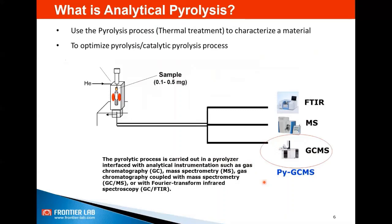What is analytical pyrolysis? In analytical pyrolysis, we use the pyrolysis process to characterize a material. It can also be used to optimize a pyrolysis or catalytic pyrolysis process. You take a small sample in a micro furnace which is set at high temperature. When the sample is exposed to high temperature, the compounds break down into smaller molecules, which are collected from the outlet with the help of carrier gas and introduced into different instrumentation like FTIR, MS, or GC-MS, which allows you to characterize the products and identify the nature of the material.